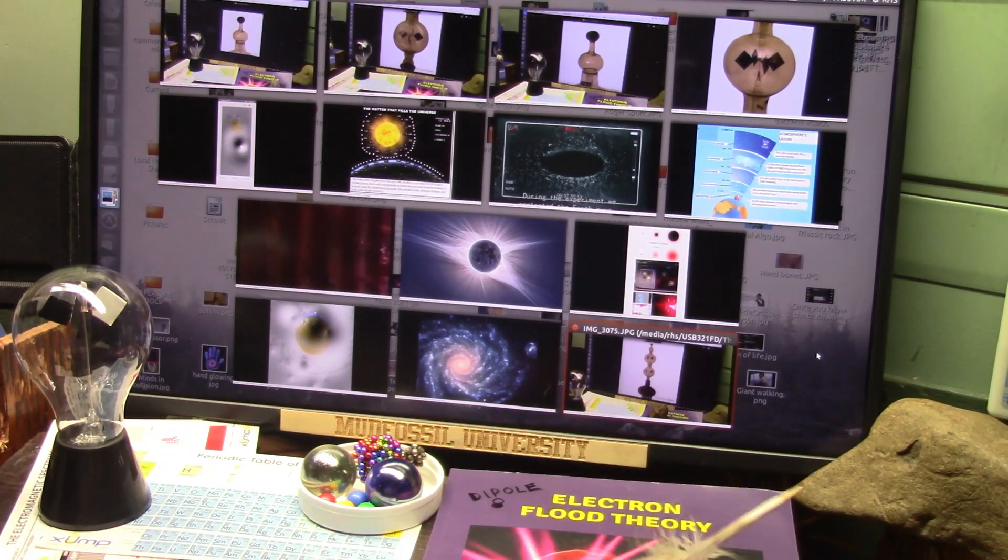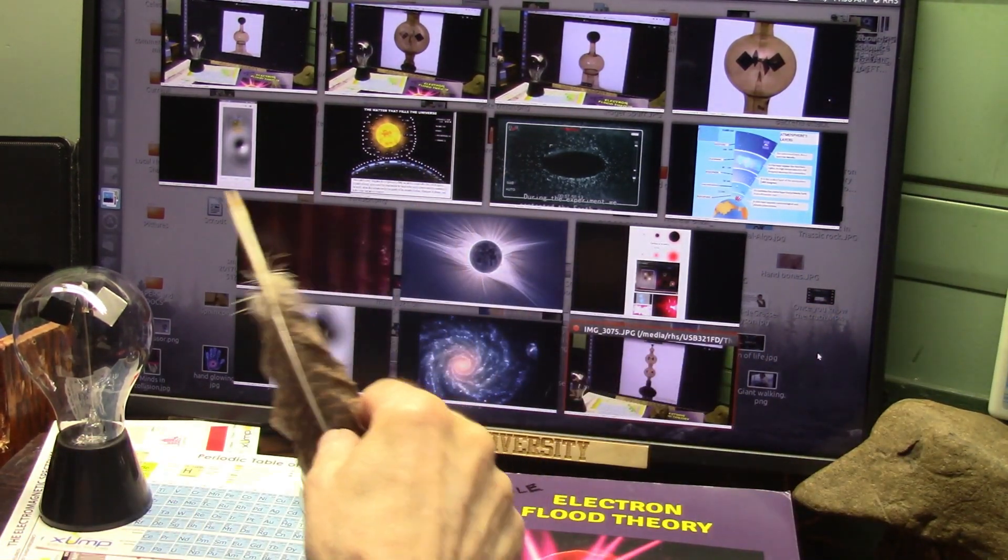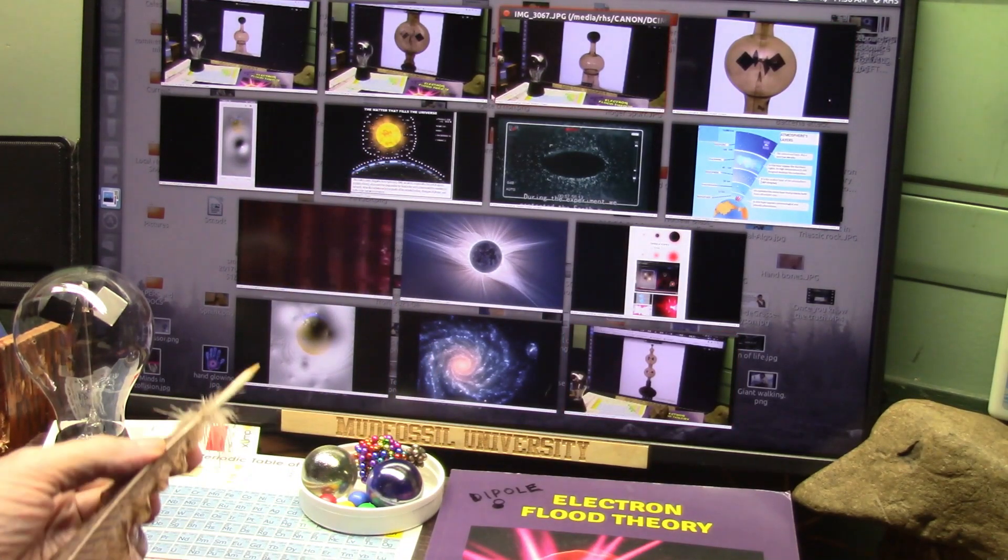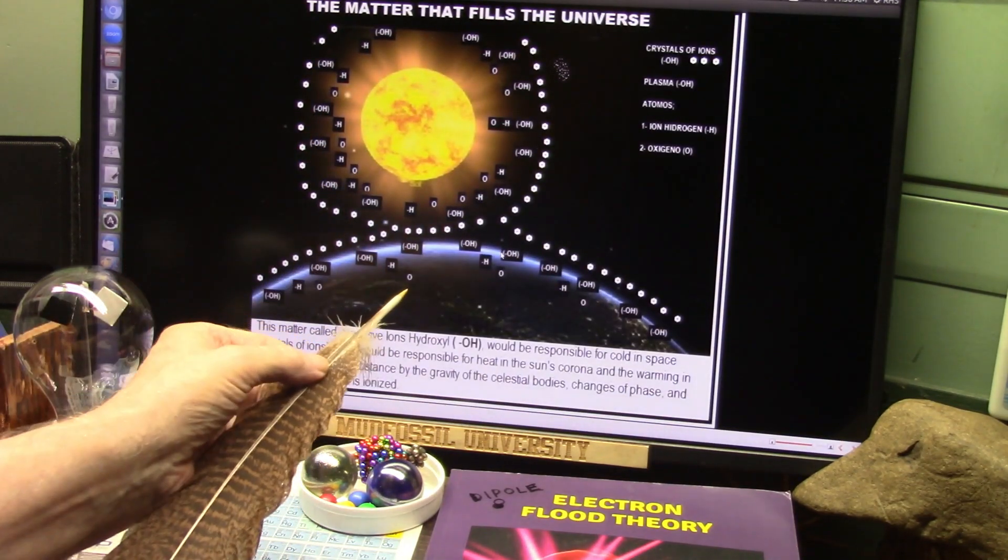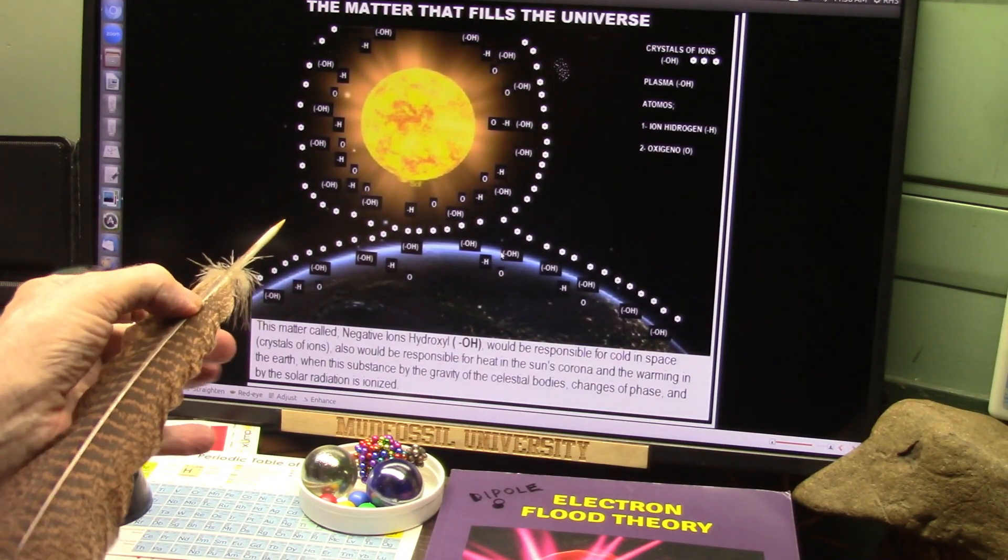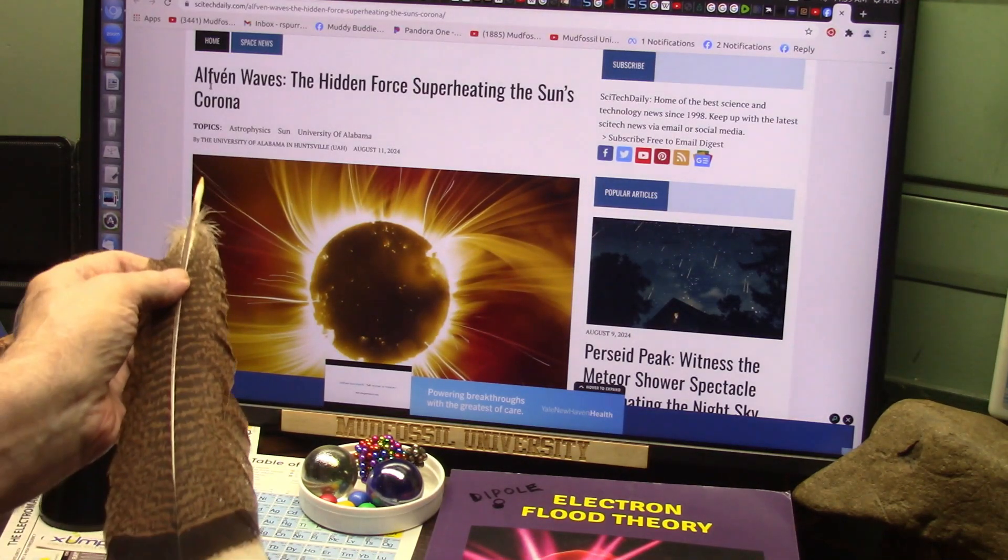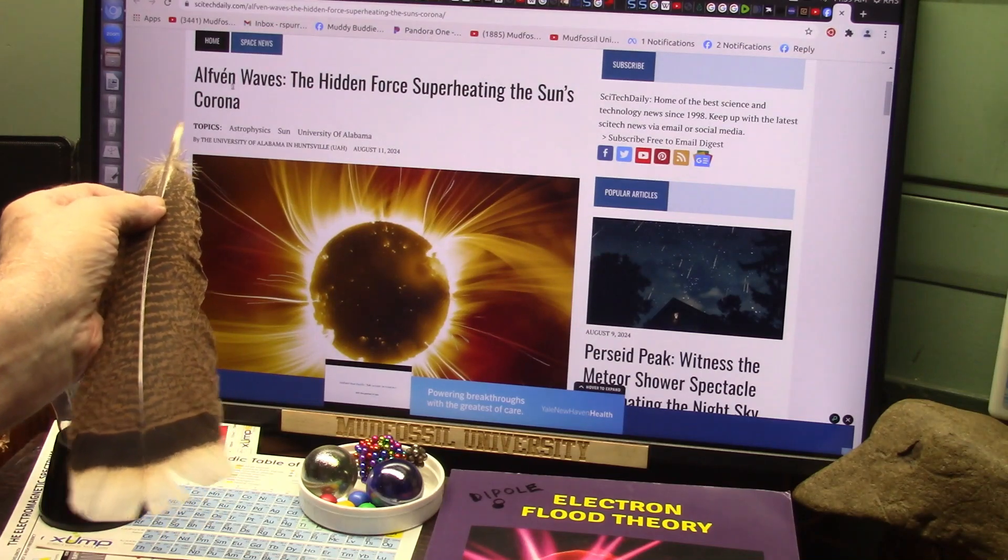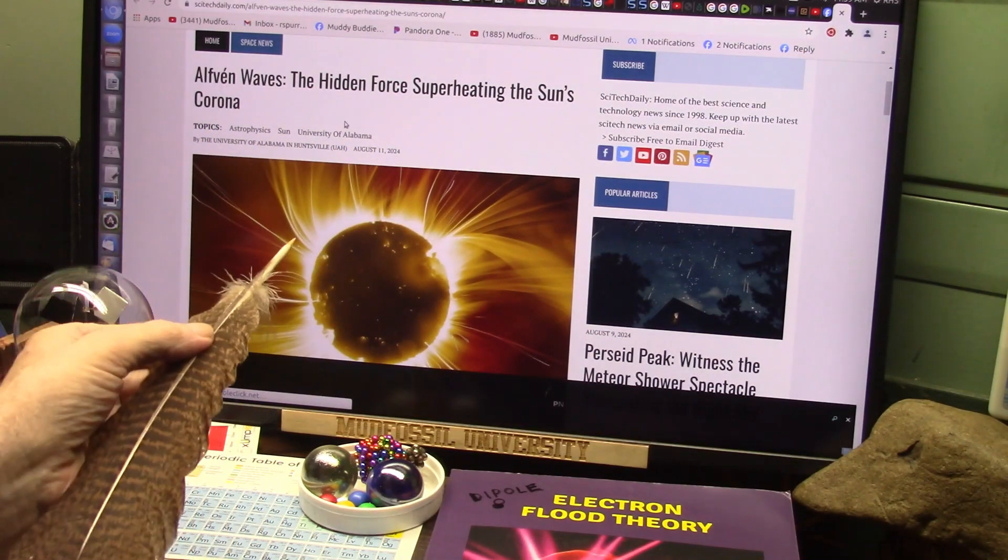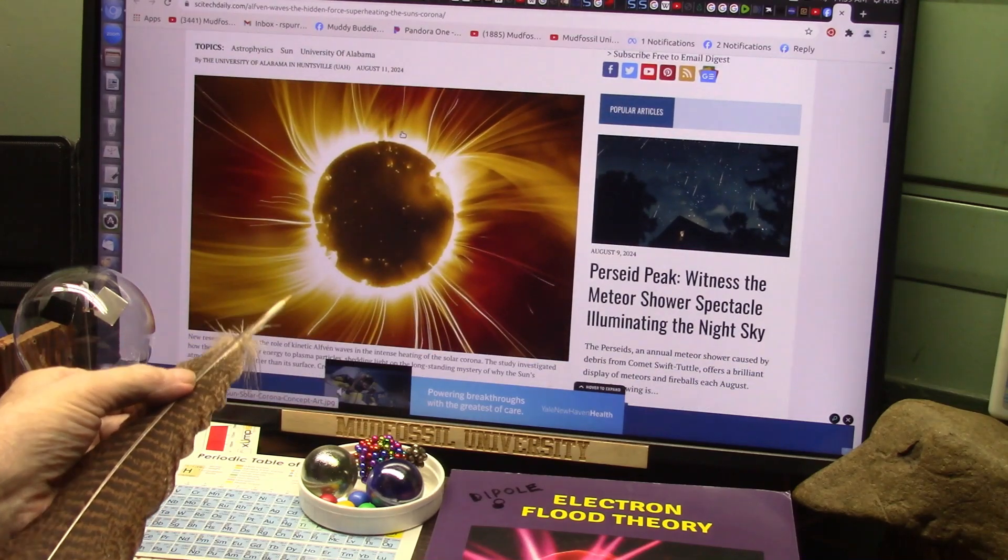Okay my friends, this is just bizarre. I just got done going through a rant about how they don't understand what's going on with the corona of the Sun. It's so simple to understand, it's unbelievable. And then all of a sudden this pops up: Alphavin waves, the hidden force superheating the Sun's corona.